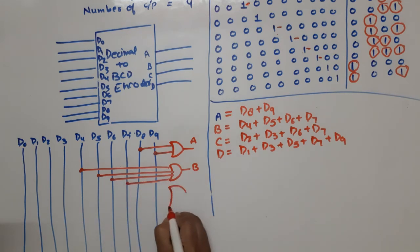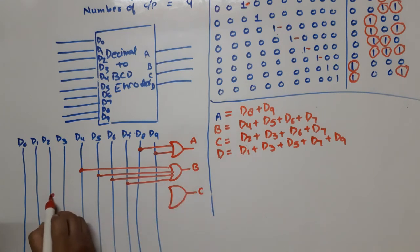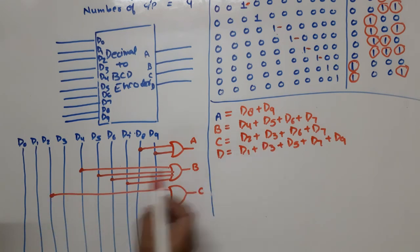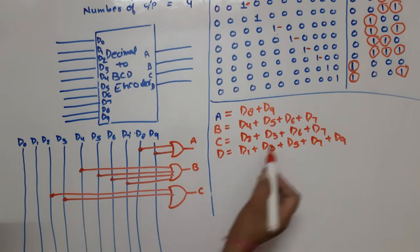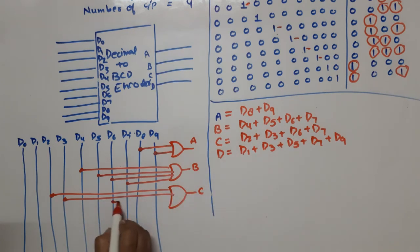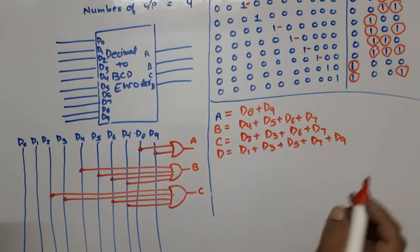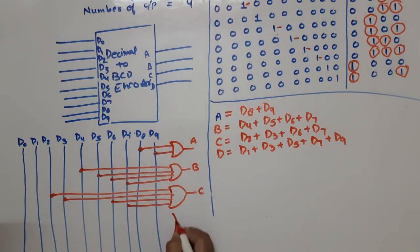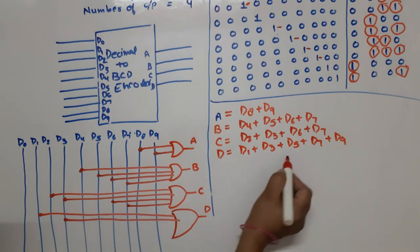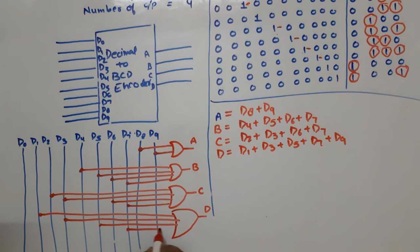Now for C, C equals D2, then D3, then D6, then D7. Last is D, which equals D1, D3, D5, D7, D9.